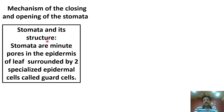Dear students, stomata are found in the epidermis of leaves. Stomata are minute, small microscopic pores located in the epidermis of the leaf, and they are surrounded by two specialized epidermal cells called guard cells.